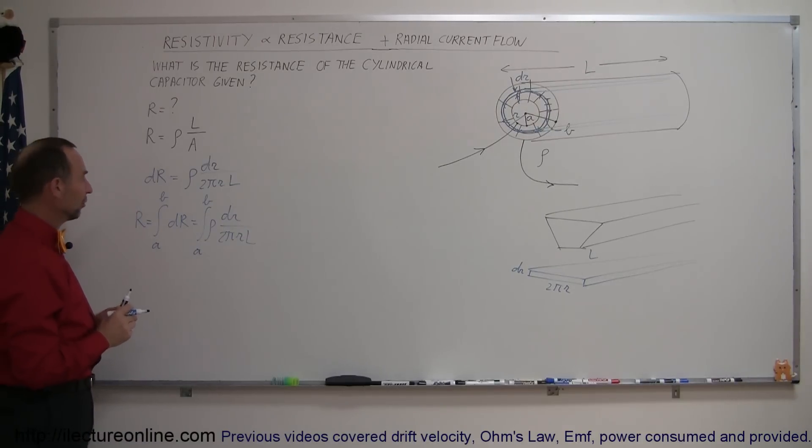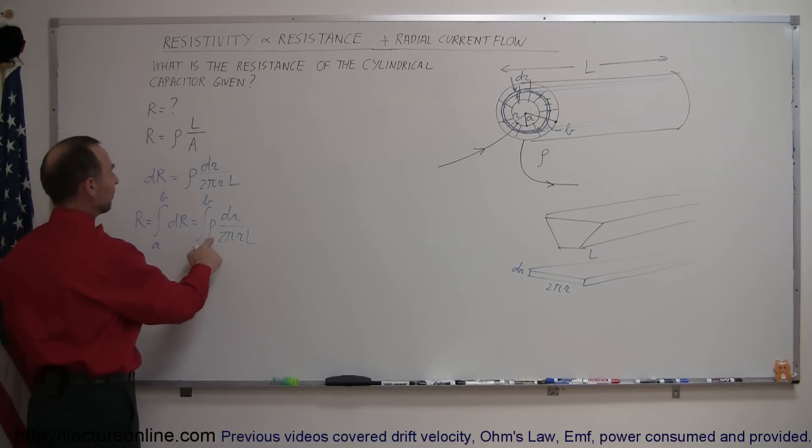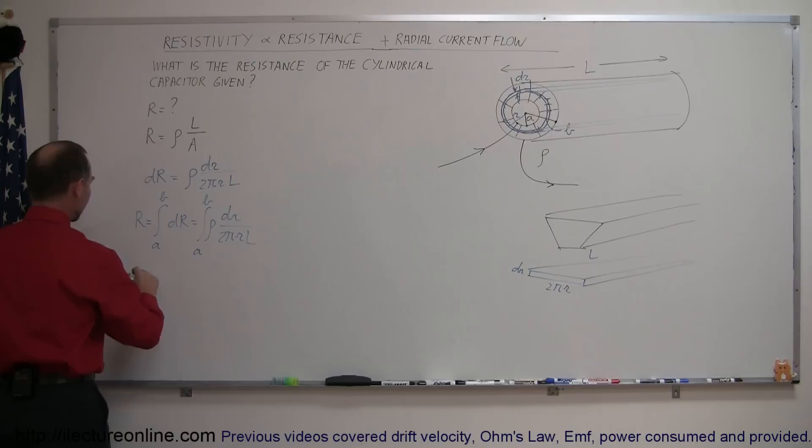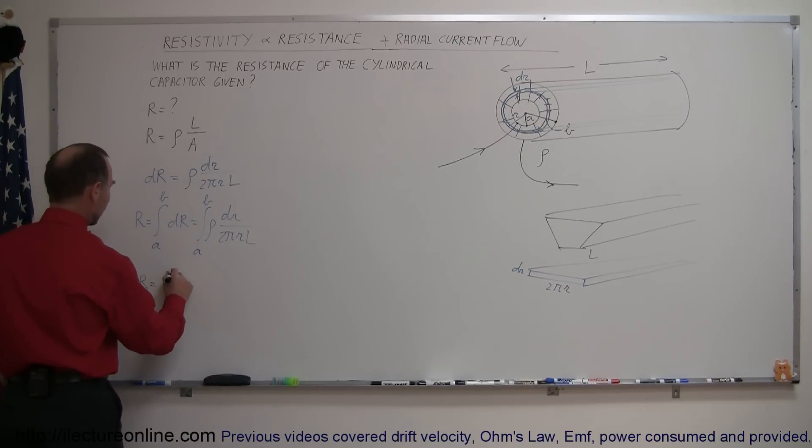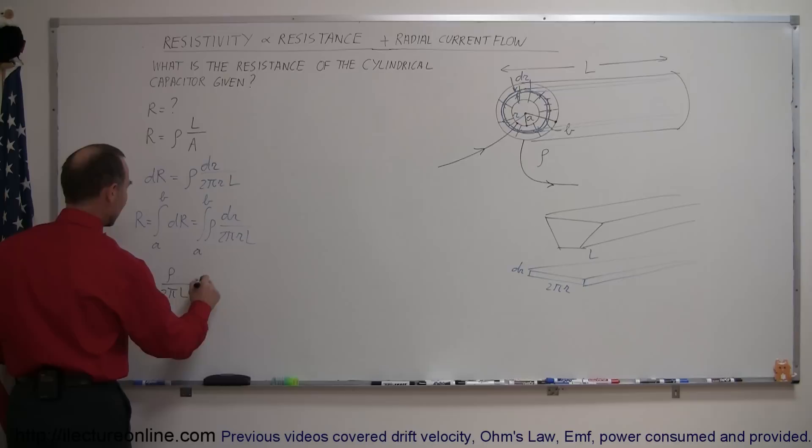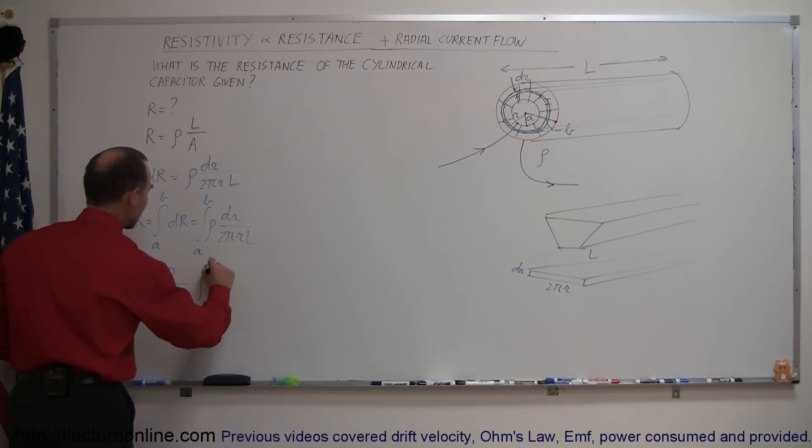Now notice that the resistivity is a constant, 2 pi is a constant, L is a constant, all those can come out of the integral sign. So the radius is equal to, pulling out the rho and pulling out the 2 pi L, because all that is constant, times the integral from A to B of dr over r.